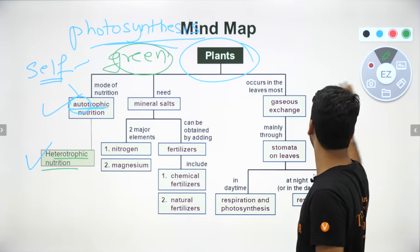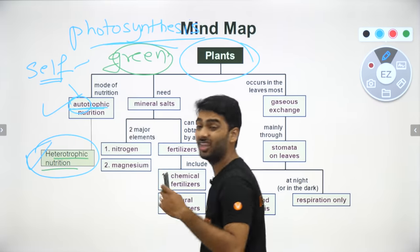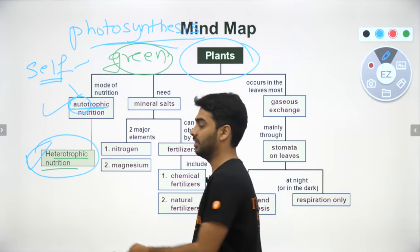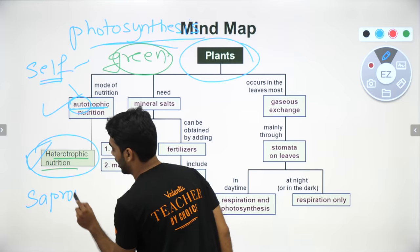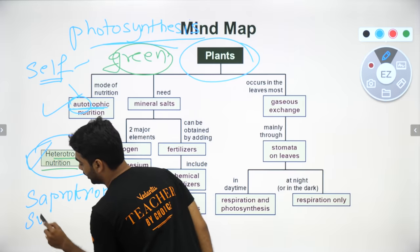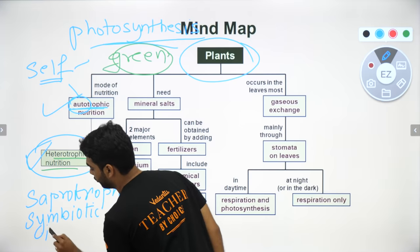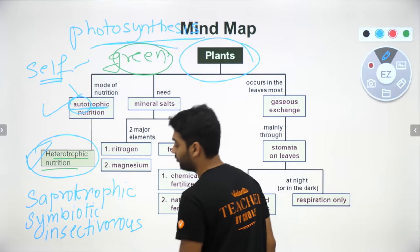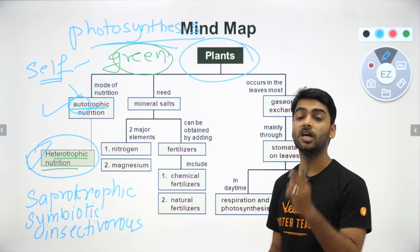The heterotrophic mode of nutrition is where the plants depend on other organisms for food. In this we have got different categories: saprotrophic, symbiotic, and insectivorous plants. We will be dealing with each and every category along with examples in the further slides, so please stay tuned.